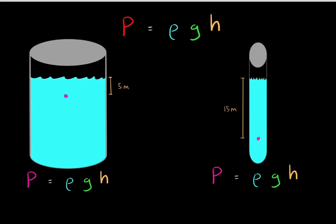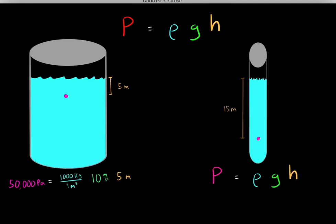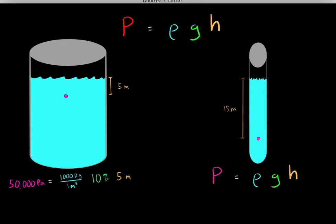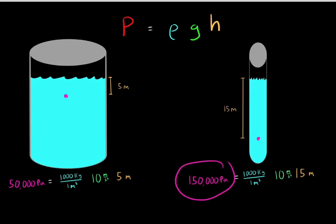We simply use the same equation. For the wide container, we find the density of the liquid multiplied by g, the acceleration due to gravity, multiplied by the height of 5 meters from the point to the surface. Plugging in all those values gives a pressure of 50,000 pascals. For the thin container, the same density and g apply, but this point is 15 meters from the surface, so we plug in 15 meters and get a pressure of 150,000 pascals.